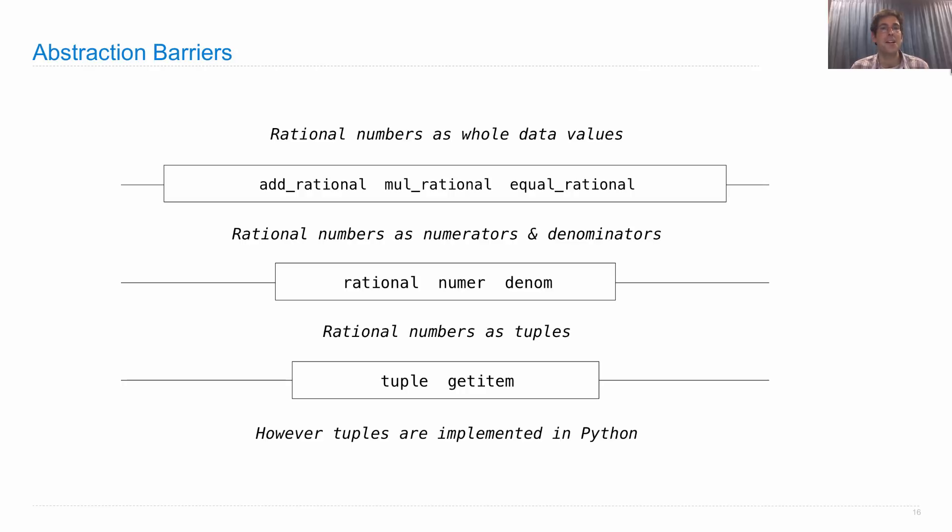Abstraction barriers allow us to write modular programs. If I focus most of my work on combining rational numbers using just the add_rational, mul_rational, and equal_rational functions, then I could actually change the implementation of rational numbers from a tuple to something else, and my program would still work because it was defined in terms of an abstraction barrier.